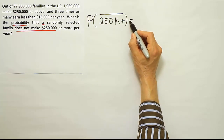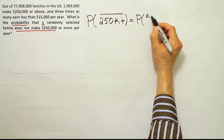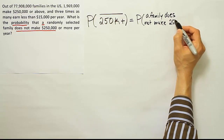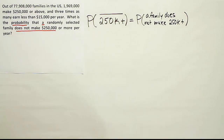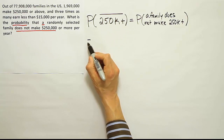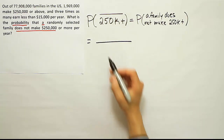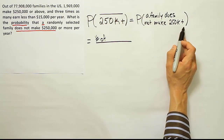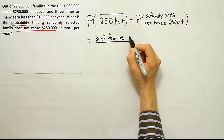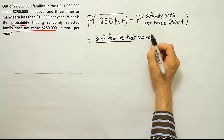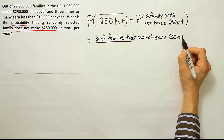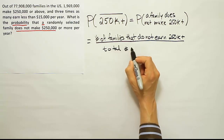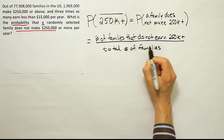So this translates in words to: the probability that a family does not make $250,000-plus per year. Basic probability is expressed as a fraction. On the top of the fraction, we always start with 'number of' — in this case, number of families that do not earn $250,000 or more per year. And on the bottom, it's always the total — in this case, total number of families. This approach will solve the problem.